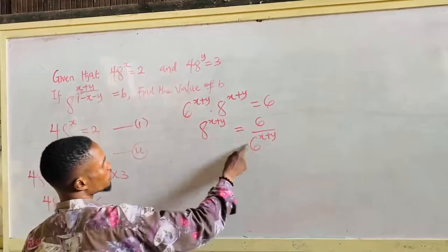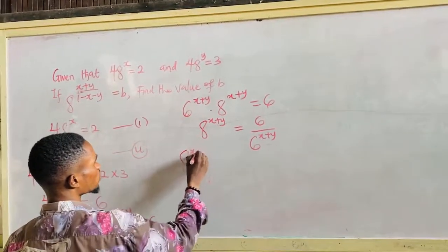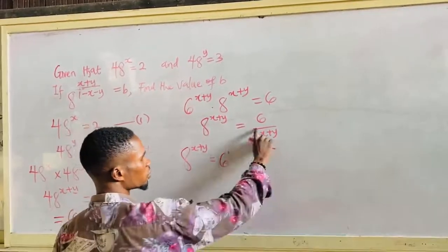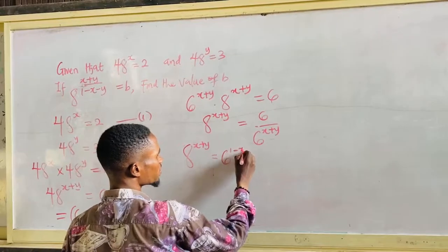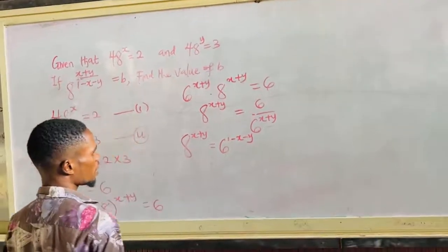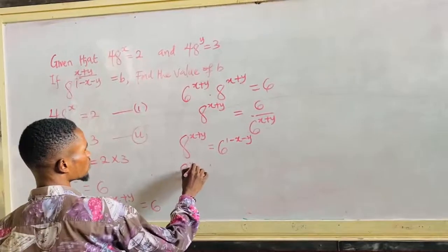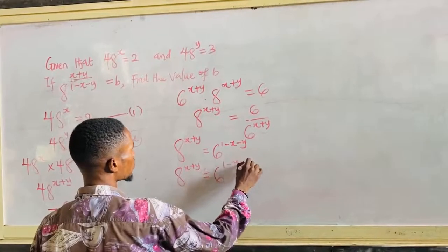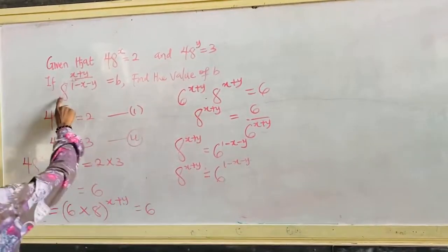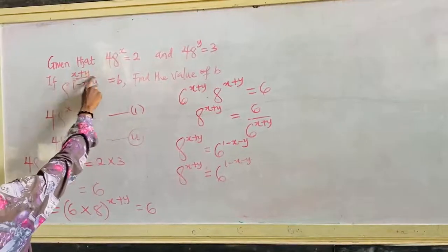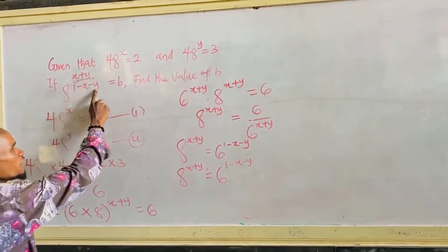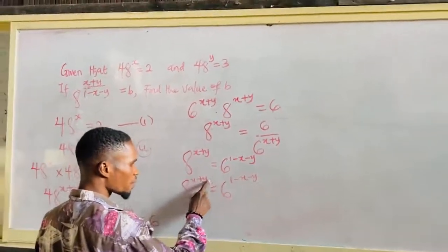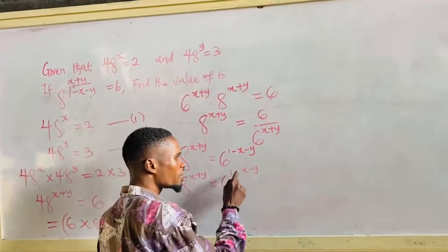By cross multiplication, 8 raised to the power of x plus y is equal to 6 over 6 raised to the power of x plus y. With indices, this division means the power becomes 1 minus x minus y. So 8 raised to the power of x plus y is equal to 6 raised to the power of 1 minus x minus y.